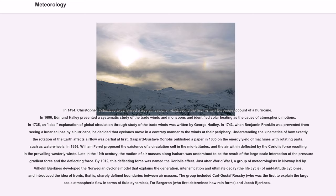Just after World War I, a group of meteorologists in Norway led by Vilhelm Bjerknes developed the Norwegian cyclone model that explains the generation, intensification and ultimate decay, the life cycle, of mid-latitude cyclones, and introduced the idea of fronts, that is, sharply defined boundaries between air masses. The group included Carl-Gustaf Rossby, who was the first to explain the large-scale atmospheric flow in terms of fluid dynamics, Tor Bergeron, who first determined how rain forms, and Jacob Bjerknes.